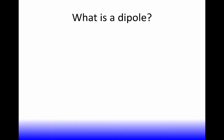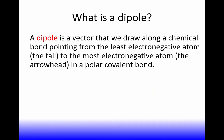What is a dipole? A dipole is a vector that we draw along a chemical bond, pointing from the least electronegative atom — that's the tail of the vector — to the most electronegative atom — that's the head of the arrow — in a polar covalent bond. A vector is essentially an arrow that has a direction and a magnitude. We draw dipoles longer when there's a big electronegativity difference and shorter when there's a small electronegativity difference.